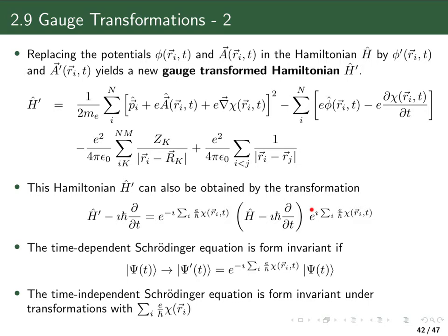If I apply the gauge transformation in this form — with e to the i times the sum over this gauge function for each electron on one side, and the corresponding e to the minus i on the other side — then I arrive at the same gauge-transformed Hamiltonian obtained by simply replacing the vector and scalar potential with the corresponding gauge-transformed potentials.